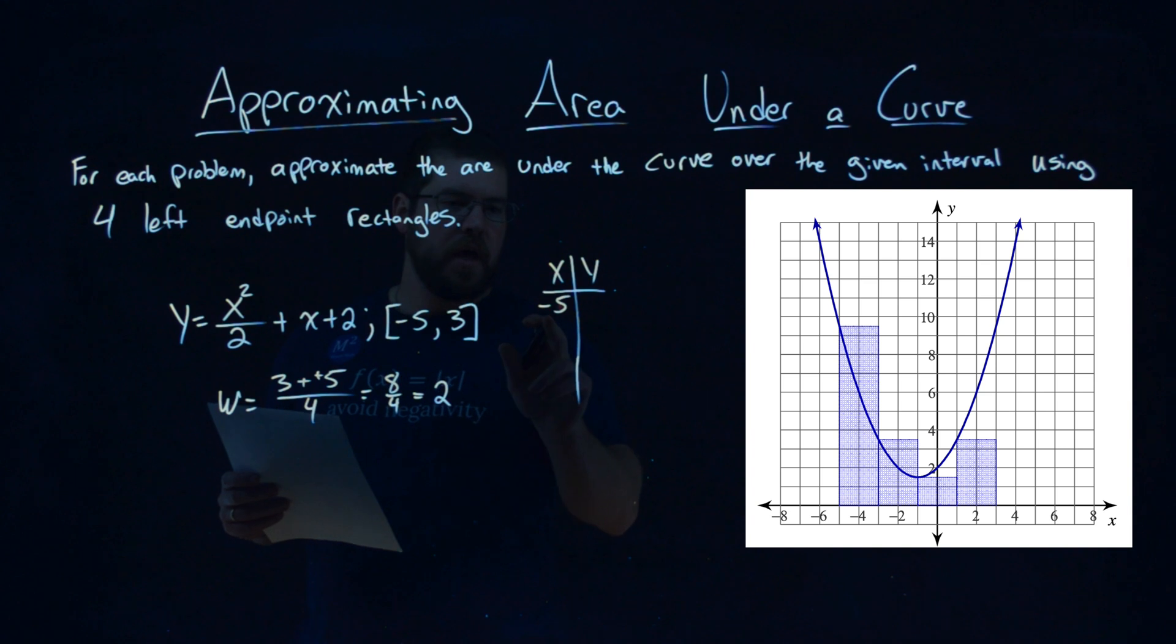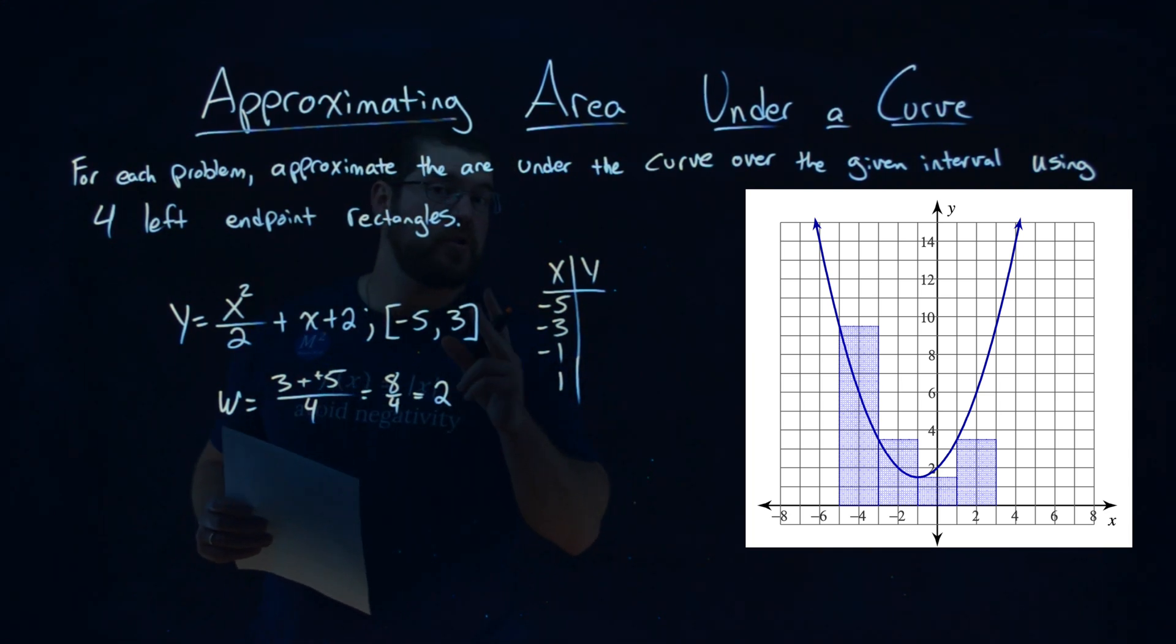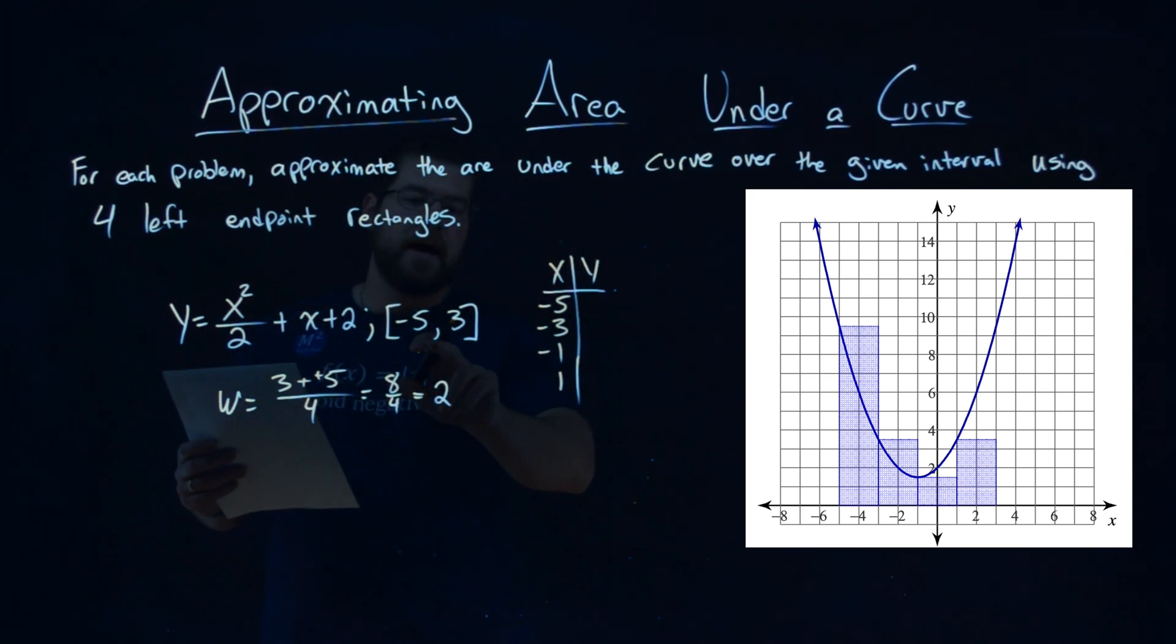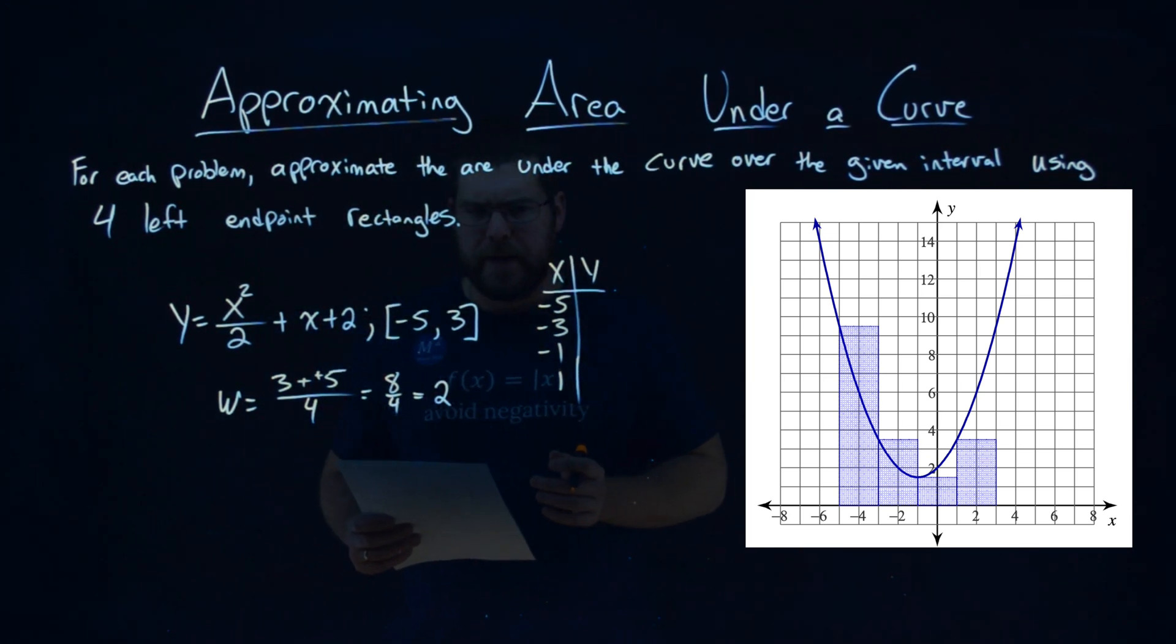So we start with the most left value of negative 5, and we're going to go by distance of 2, 2 units each time. So negative 5 and 2 more is negative 3. Then we should have negative 1, and lastly, a positive 1. Notice that if we did 2 more, that extra width will get us to the final right endpoint of our domain here.